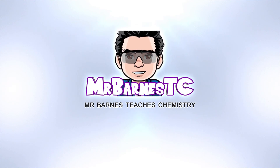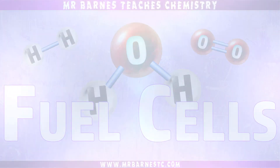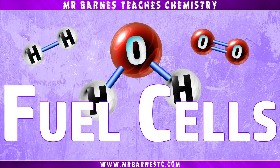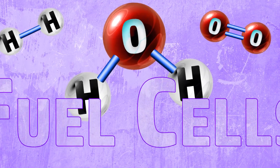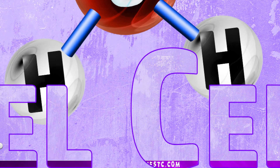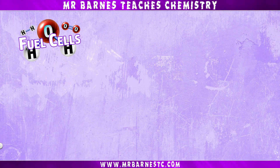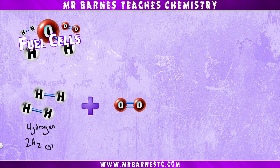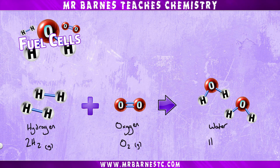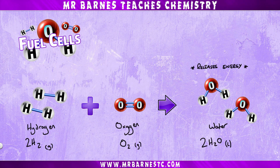Hi guys, welcome to this video looking at what a fuel cell is. If we start off with the chemical equation for what happens in a fuel cell, nice and simply hydrogen H2 reacts with oxygen O2 to form water H2O. Now when this happens it releases energy, and it's that energy that is useful in a fuel cell.